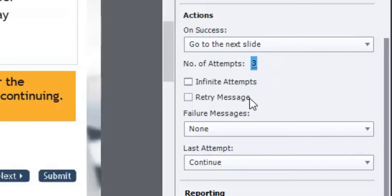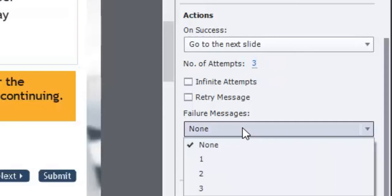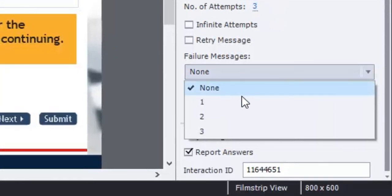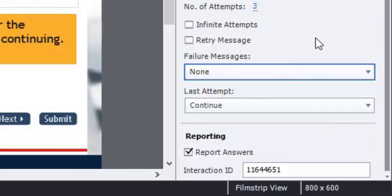But I don't want to select a retry message, and again you'll see why in a moment. And I don't have any specific failure messages for the try that they're taking. In this case, you would use this feature to have a retry message number one for the first attempt, number two for the second attempt, and number three for the third attempt. The reason I don't want that is I'm going to create specific feedback for each and every correct or wrong answer.